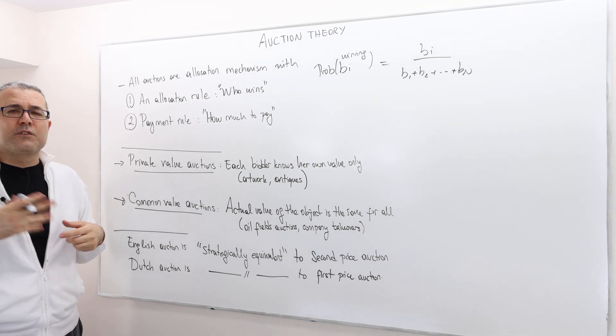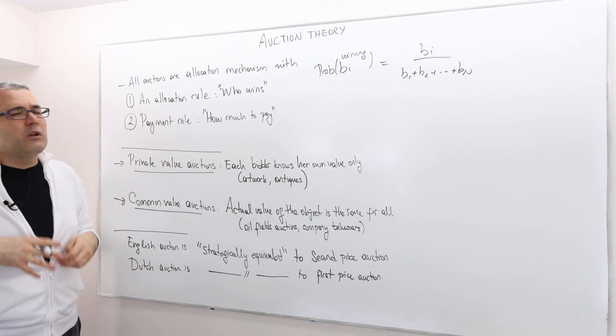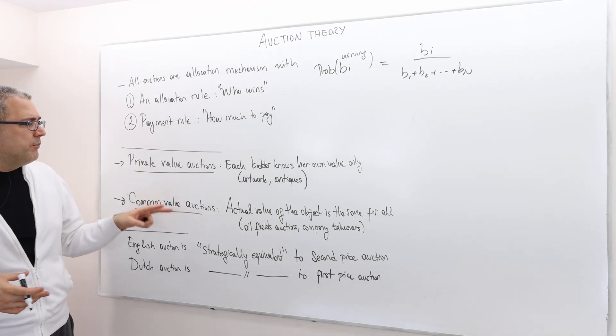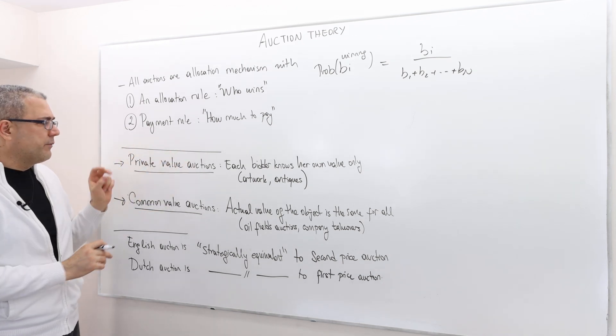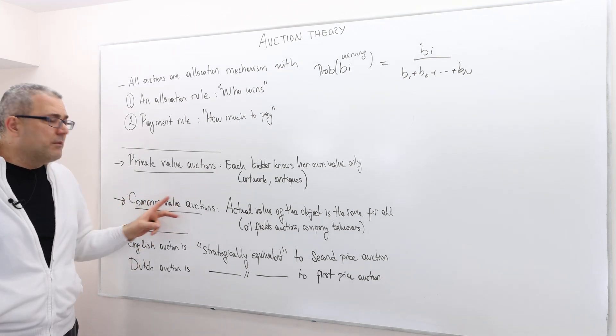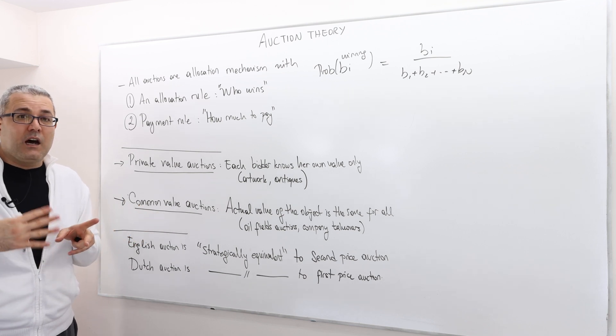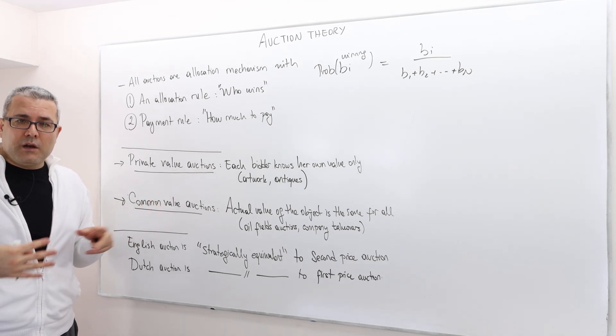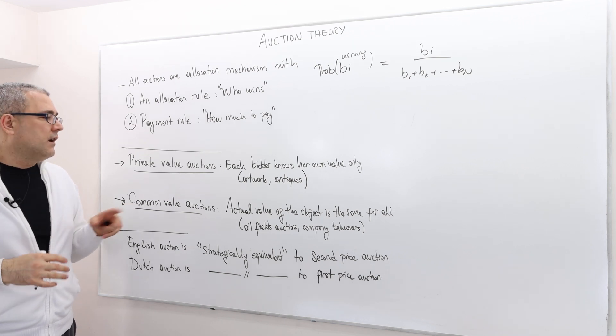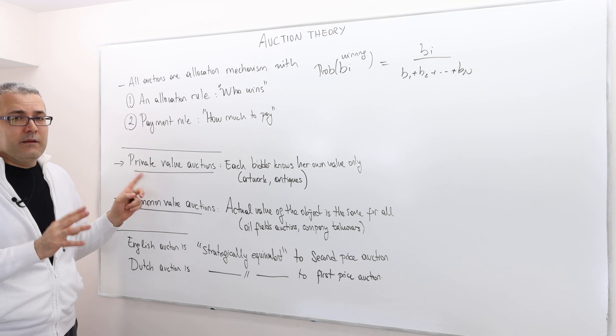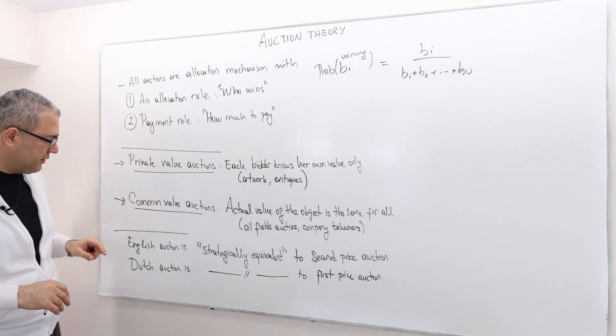But nevertheless, for simplifications, almost all our analysis, theoretical analysis, lie either on this category, private value auctions, or this category. In this chapter, I'm not going to talk about common value auctions because they are highly complicated animals and it requires a bit more advanced skills. And so, we're going to basically focus completely on private value auctions.